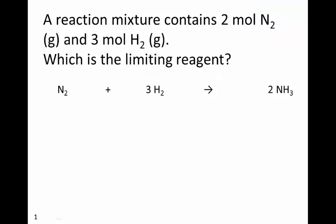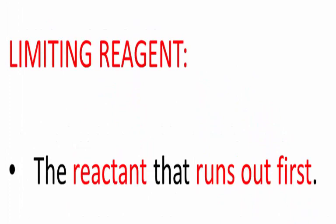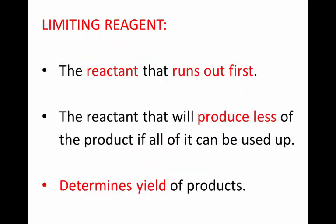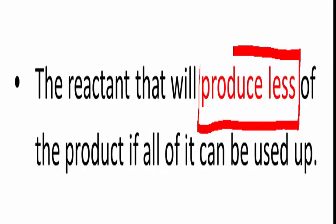So obviously the first thing we need to ask ourselves is what is limiting reagent. It's the reactant that runs out first in a reaction, and because it runs out first it will produce less of the product if all of it can be used up.